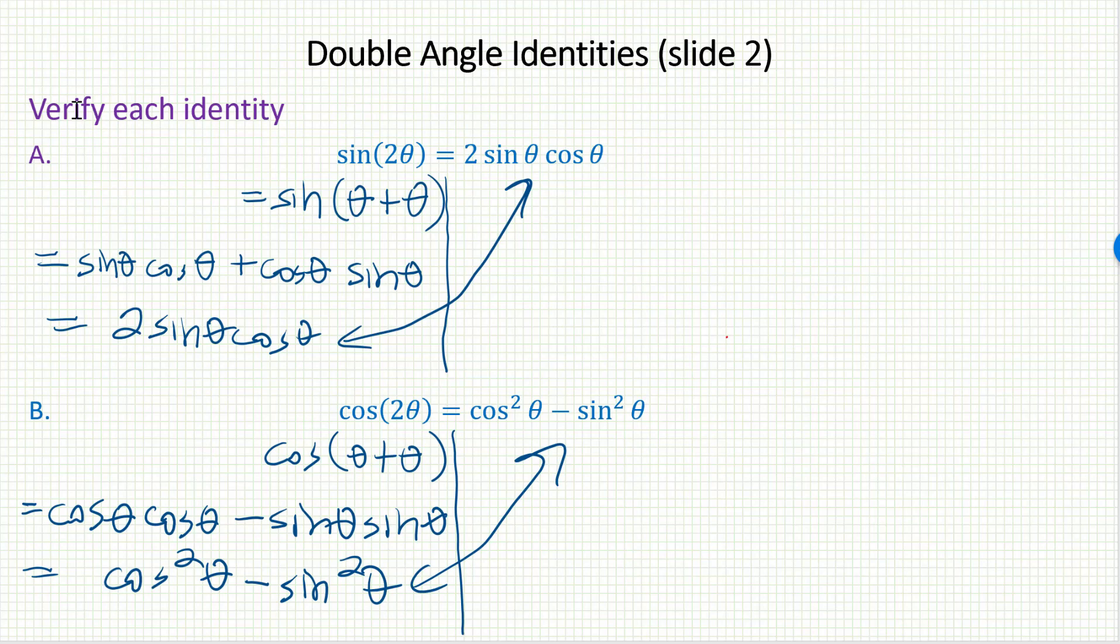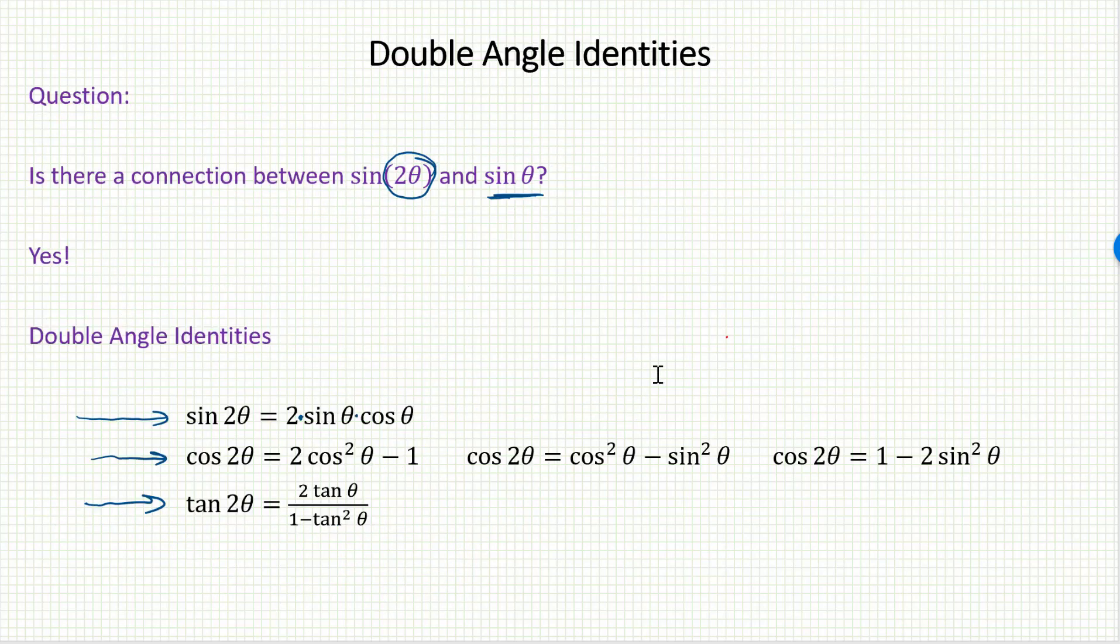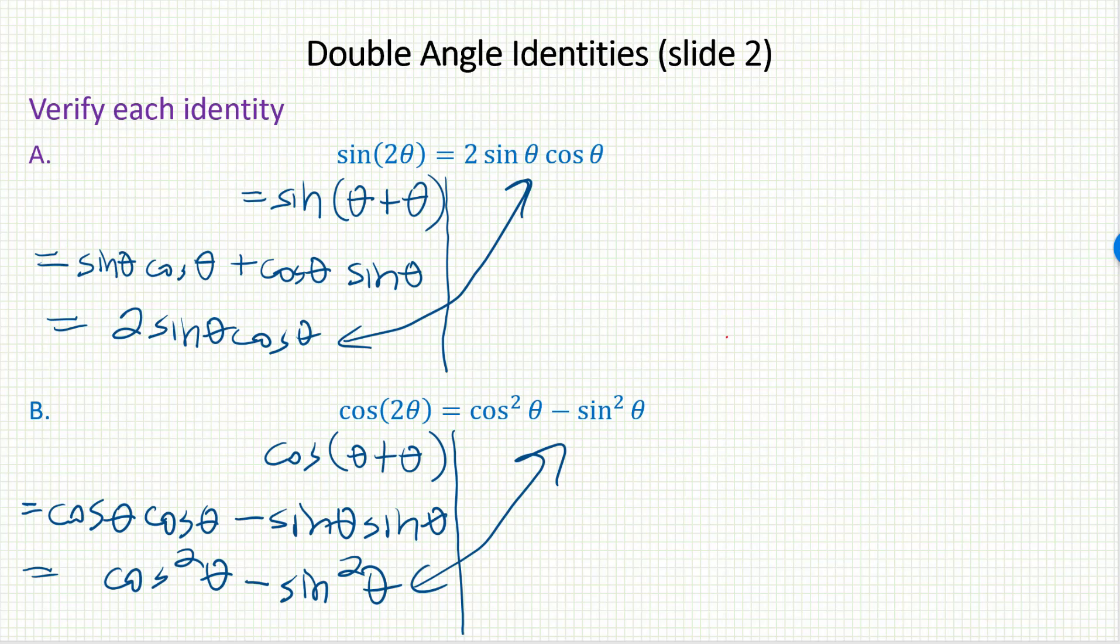Now, the cosine double angle identity, that's the one that had three different versions. We've just proved this version. Where do the other two come from? Why do we have these ones with only cosine or only sine? That's very easy to determine. We know this is true now.